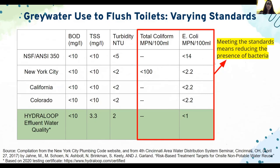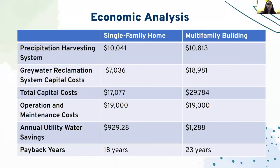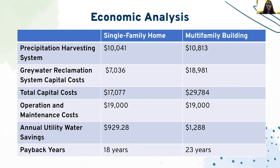We were able to conduct an economic analysis. Water consultants Tiffany and Sean from Greater Good Industries were able to provide overall costs of implementing both systems in the proposed dwellings. Costs were broken down by assets per system. Total capital costs for both systems in the single-family home amounted to $17,077 and $29,784 for the multi-family building. Operations and maintenance costs averaged about the same for each dwelling at around $19,000 due to the same water purification methods being utilized. The payback timeframe for the single-family home came to 18 years and 23 years for the multi-family building, exclusive of operations and maintenance costs, which are variable based on regional precipitation, climate change, and different purification methods.